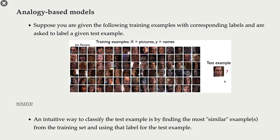Another intuitive way to do this is by using the notion of analogy. For example, suppose you are given a bunch of images and their labels, so our x is pictures and our y is names associated with these pictures. Then we are given a new unseen test example — a picture — and we want to find the label or name for that picture. An intuitive way is to find the most similar picture in our training data and use its label as the label for the new picture.